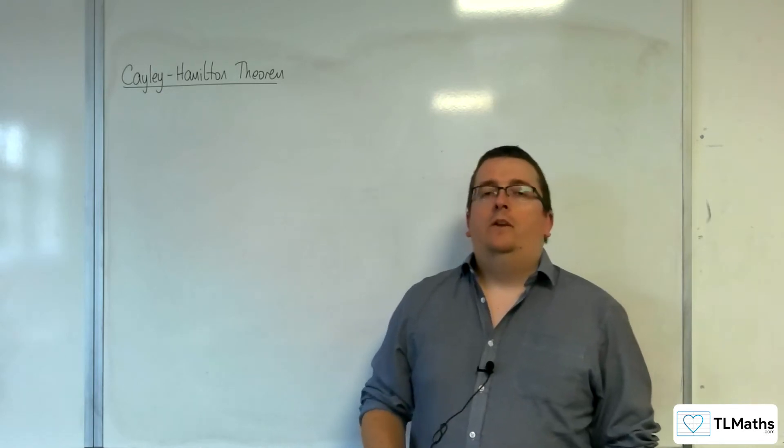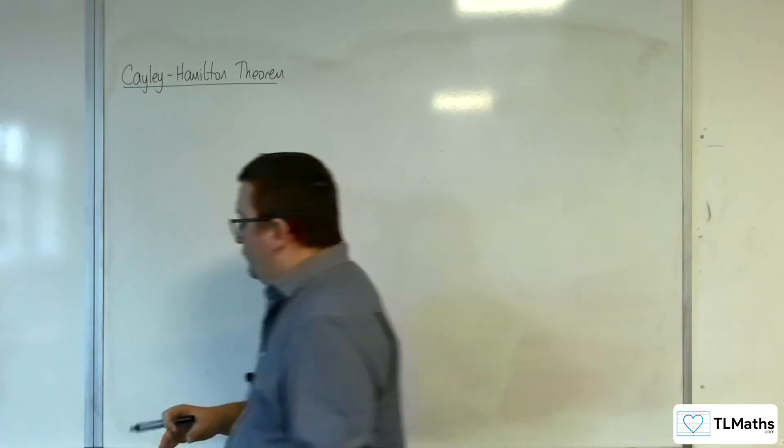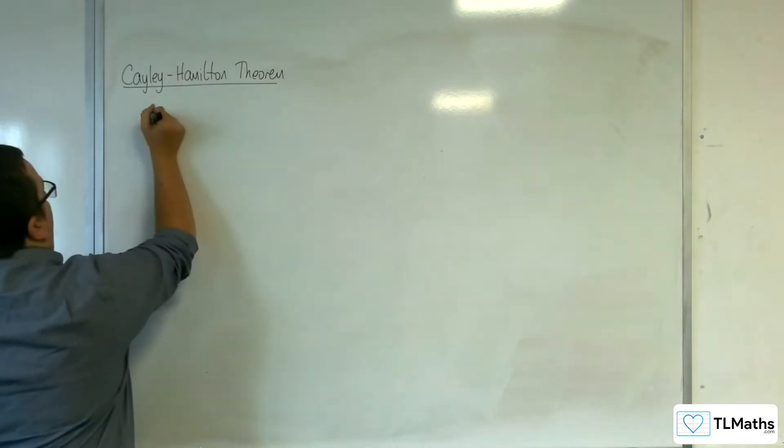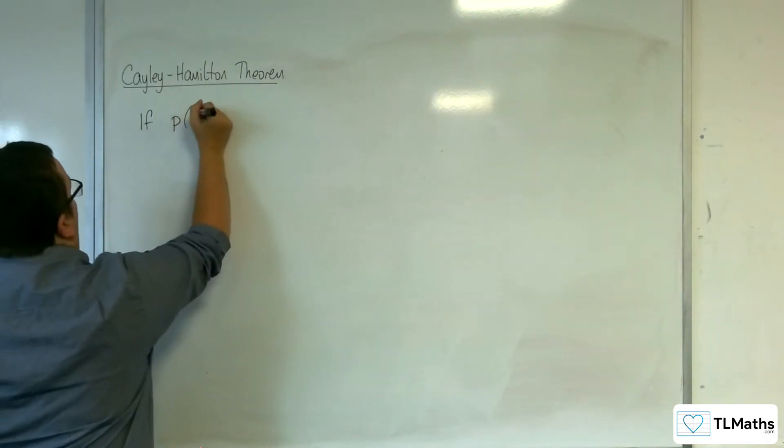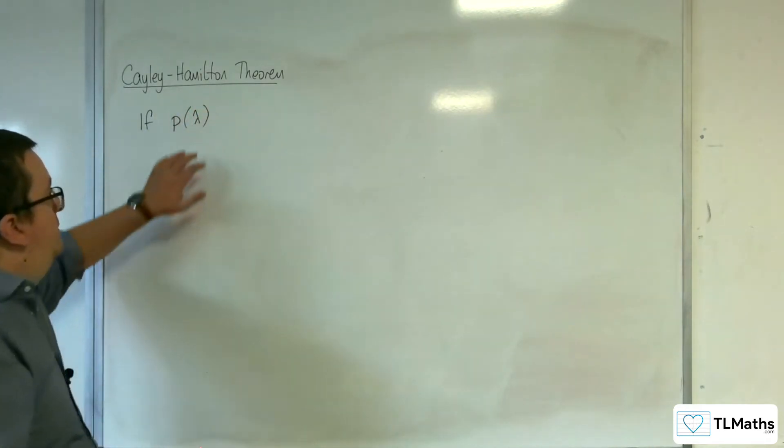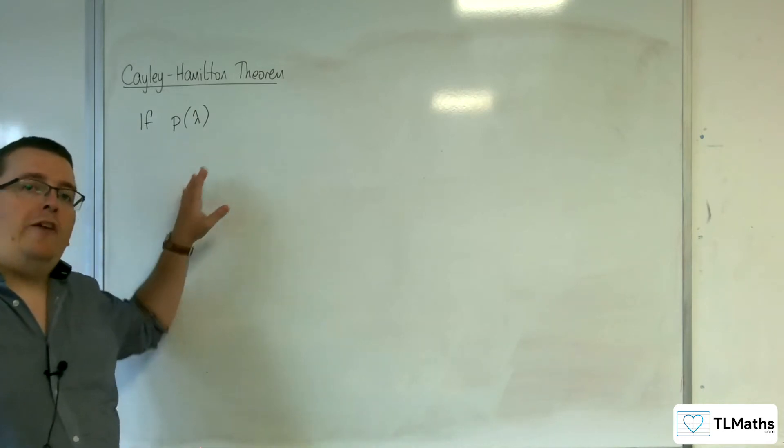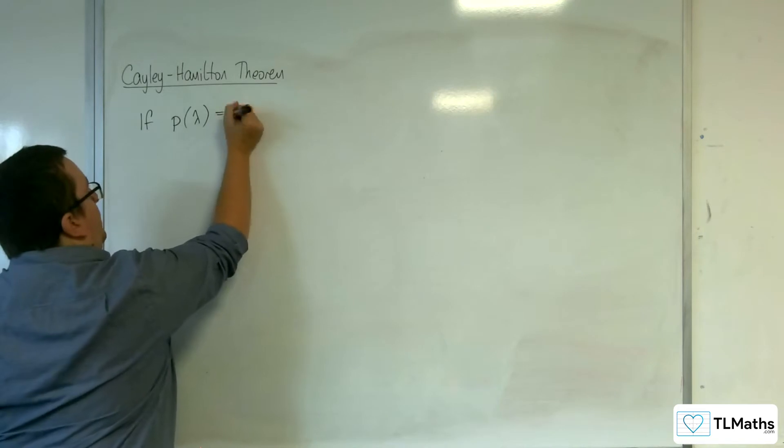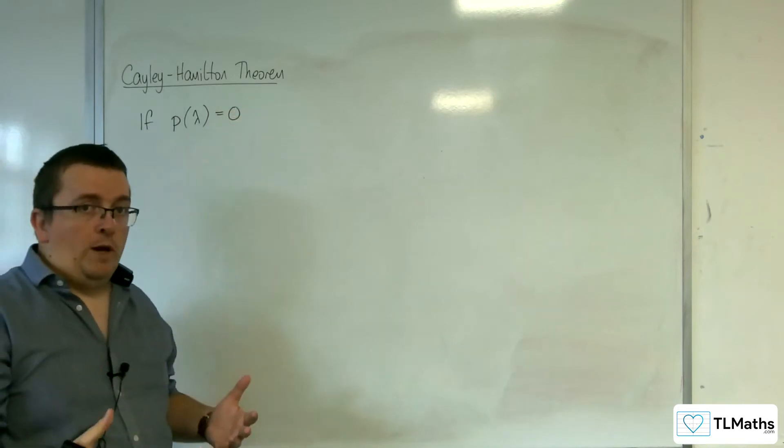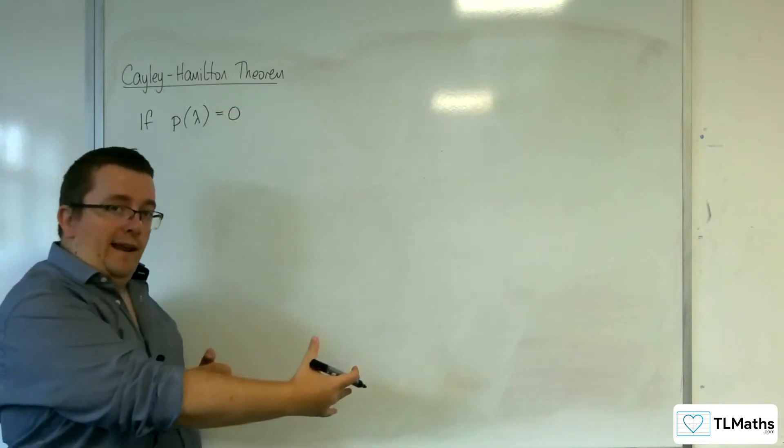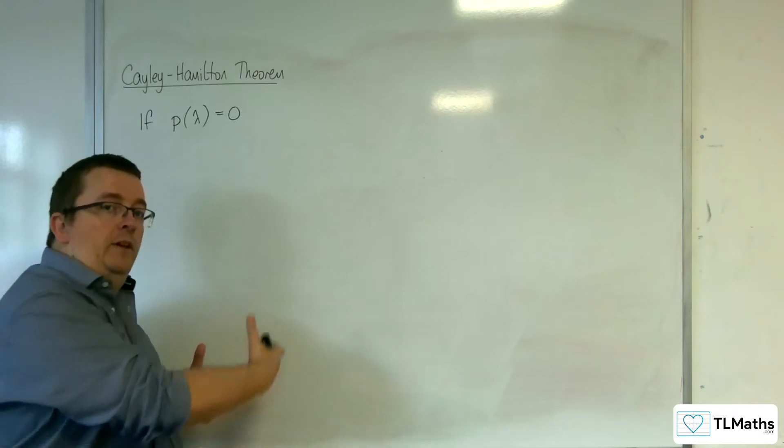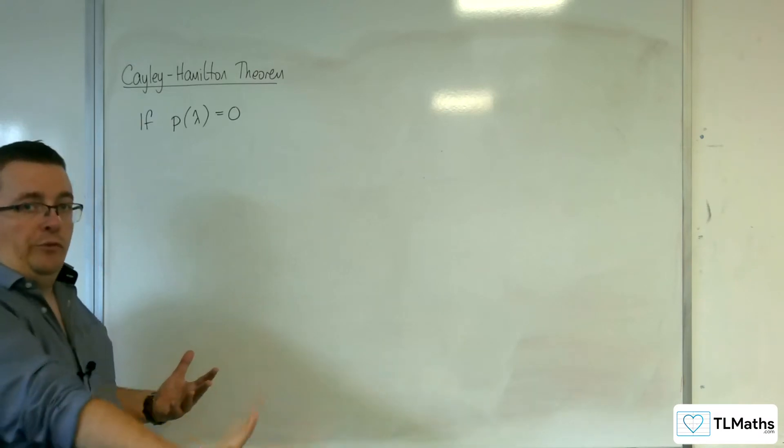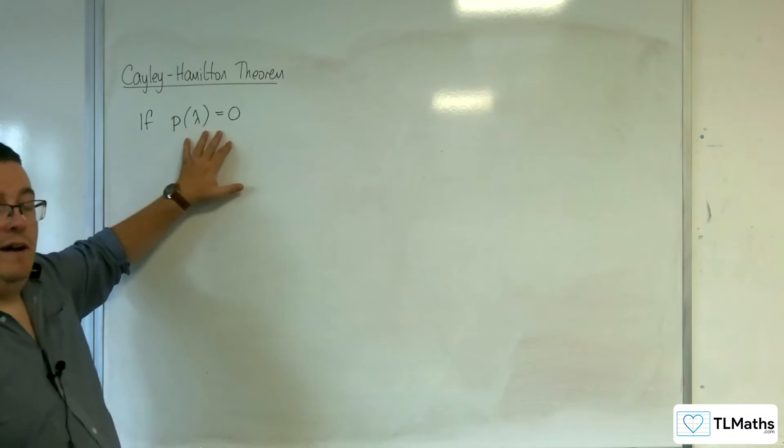Okay, so what that means is that if P of lambda, now P of lambda is your characteristic polynomial. If I put that equal to 0, then that's our characteristic equation. So that's the equation that we get in our lambdas. So it might be lambda cubed plus 2 lambda squared, etc., equals 0. And that's the equation where we get our eigenvalues from.